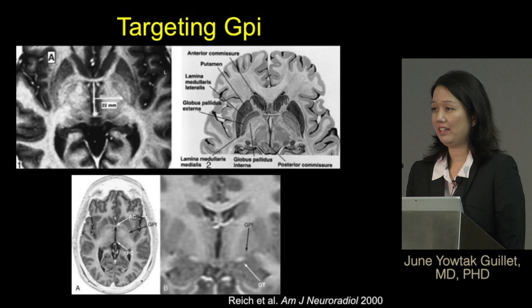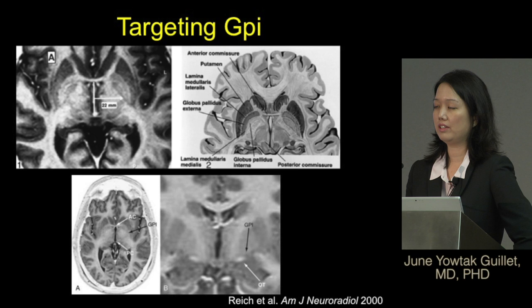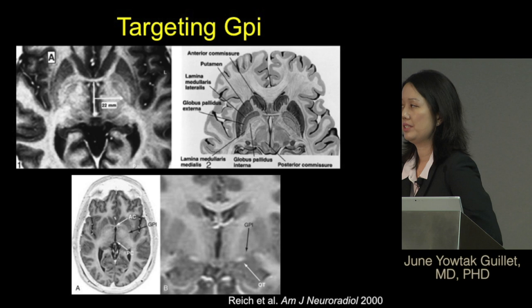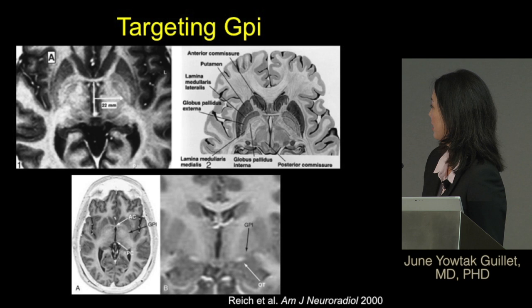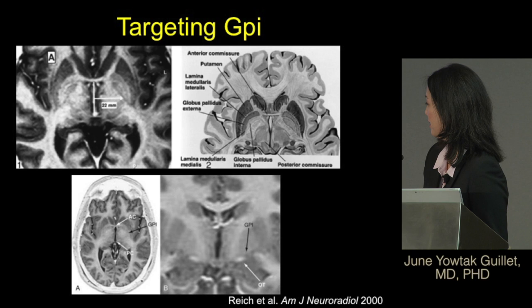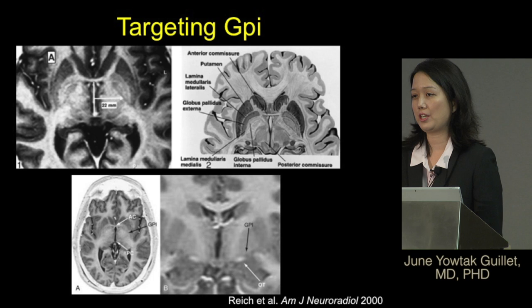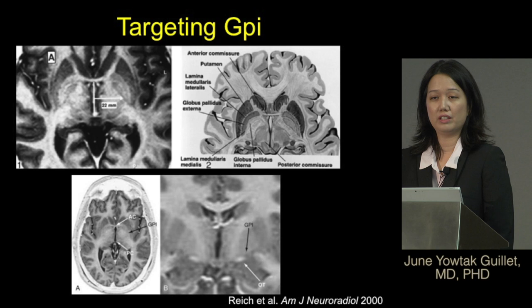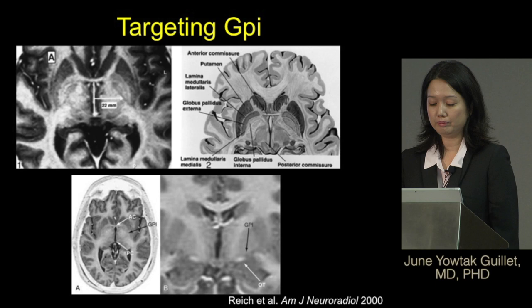Location is key for deep brain stimulation. In dystonia patients we target the globus pallidus internus, or GPI. On MRI scans you can see it located here — this lighter grayish area — which is the target we're trying to reach. In the axial and coronal views below, you can also see the optic tract, which is directly below the globus pallidus. Knowing its proximity is critical during surgery.